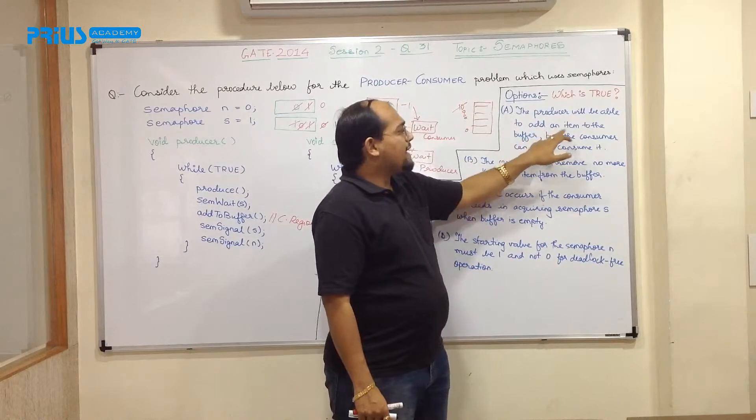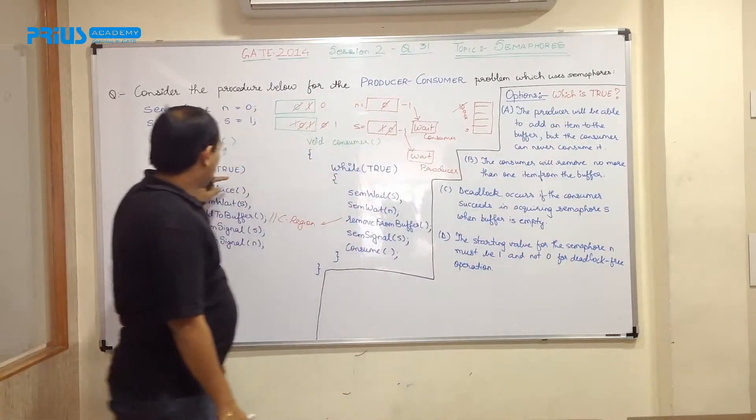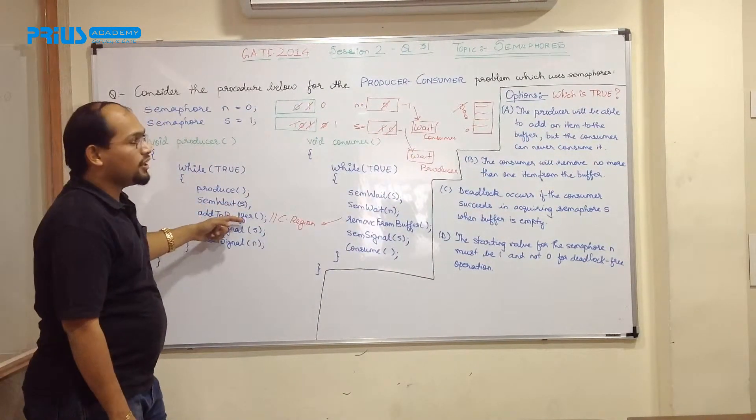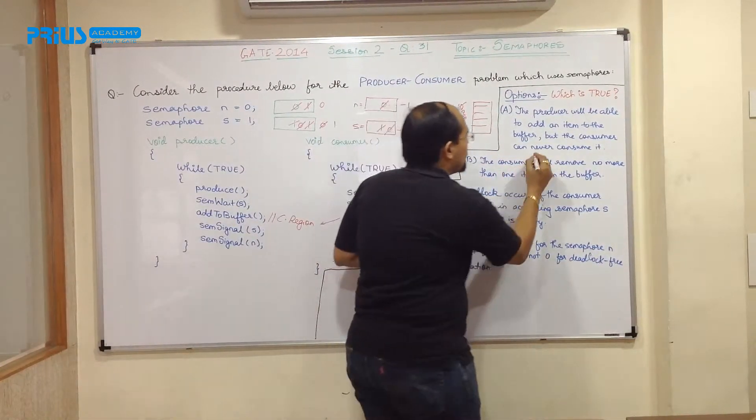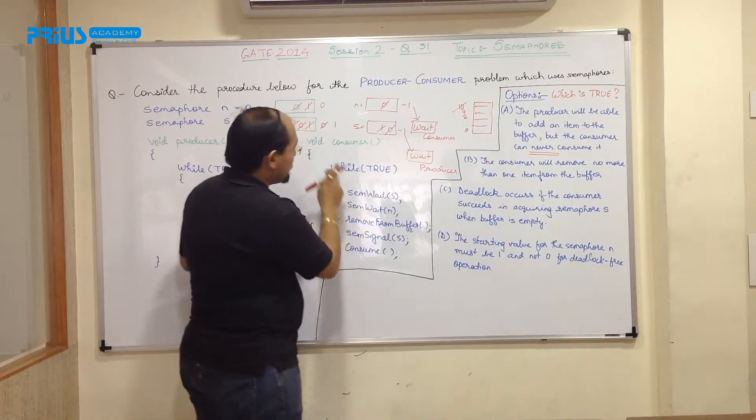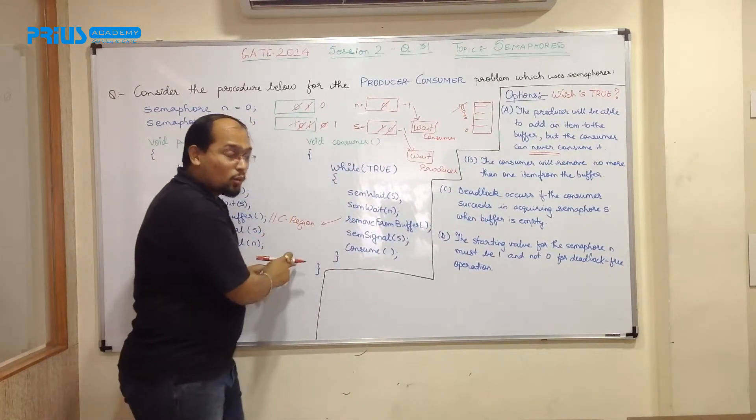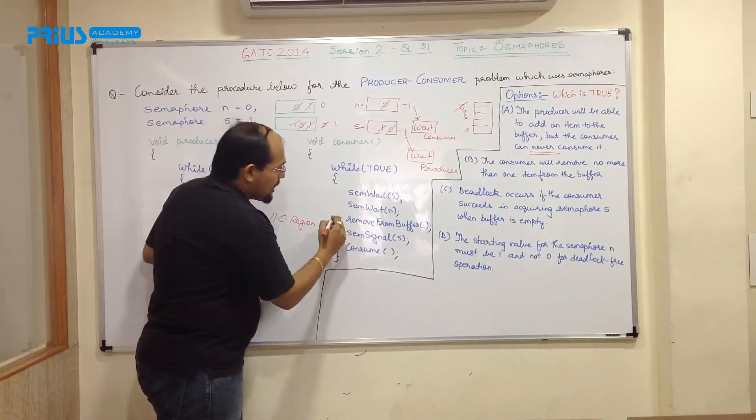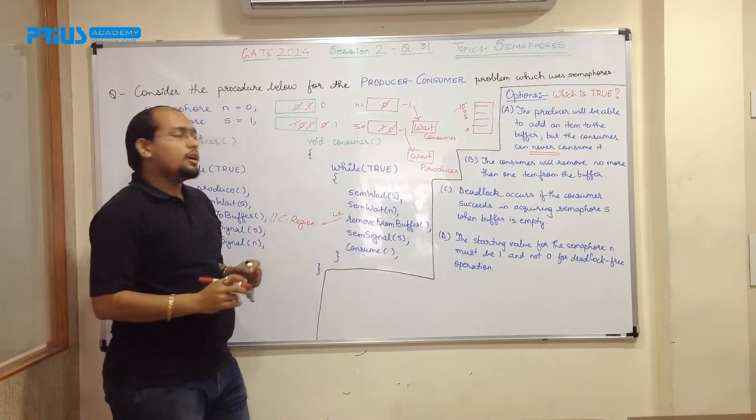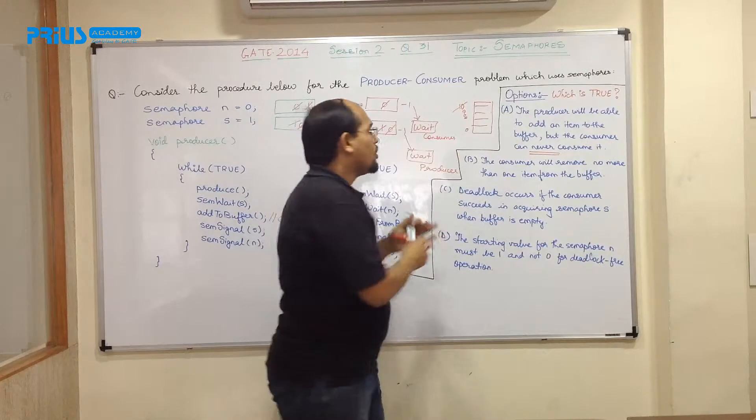Producer will be able to add an item to the buffer. Yes, we have seen that producer is producing an item and it is adding to the buffer, but consumer can never consume it. Now, never consume it. It cannot happen because we have already seen that after producer is executing once, consumer can enter it, enter into the critical region and it can consume the item. So this option is false.